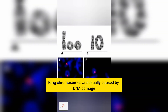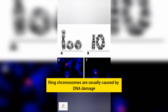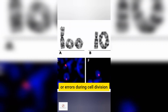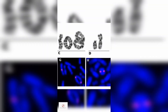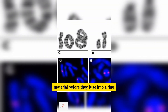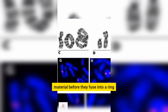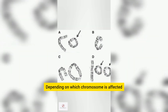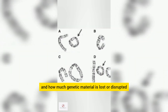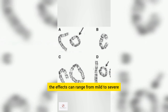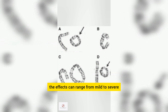Ring chromosomes are usually caused by DNA damage or errors during cell division. The broken ends of the chromosome lose genetic material before they fuse into a ring. Depending on which chromosome is affected and how much genetic material is lost or disrupted, the effects can range from mild to severe.